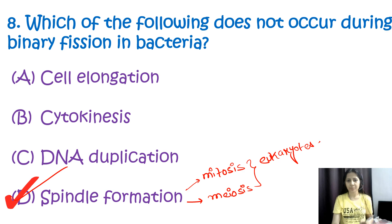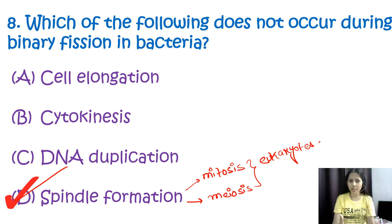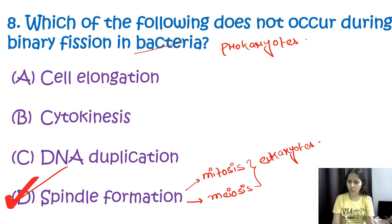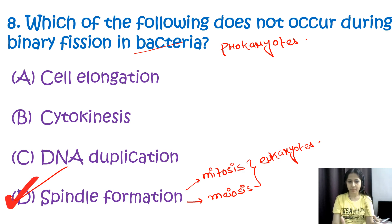Spindle formation is involved in the separation of chromosomes. Bacteria are prokaryotes and do not undergo meiosis or mitosis; thus spindle formation does not take place in bacteria. The correct option is D, spindle formation.